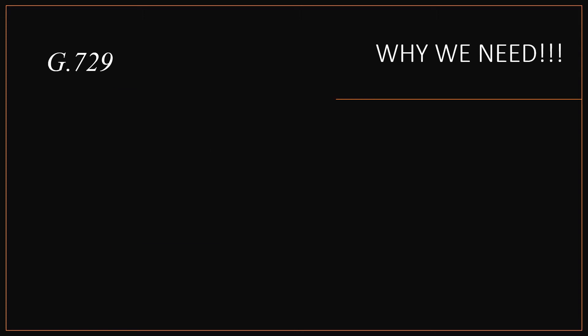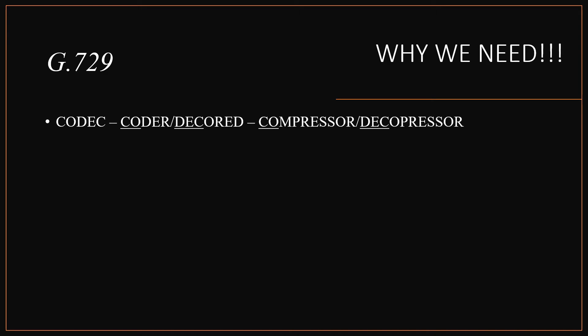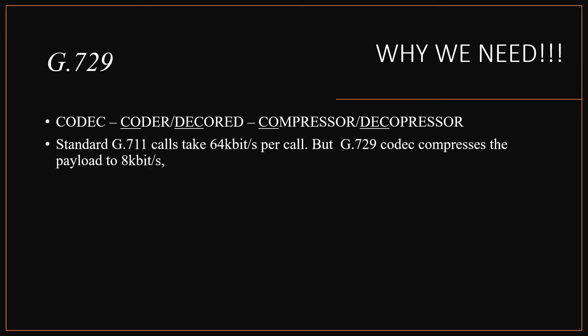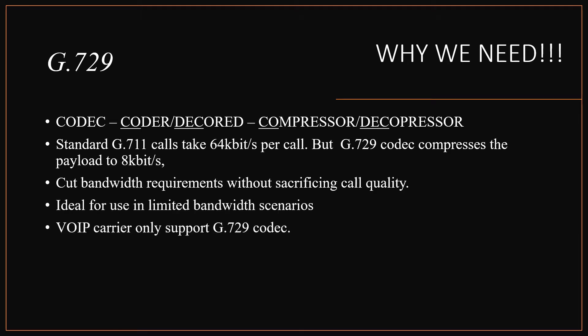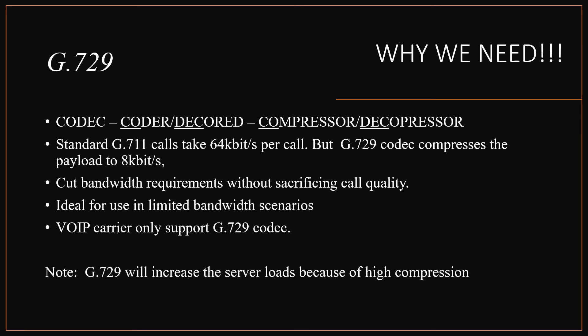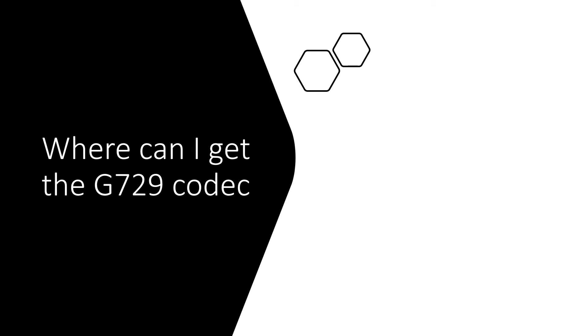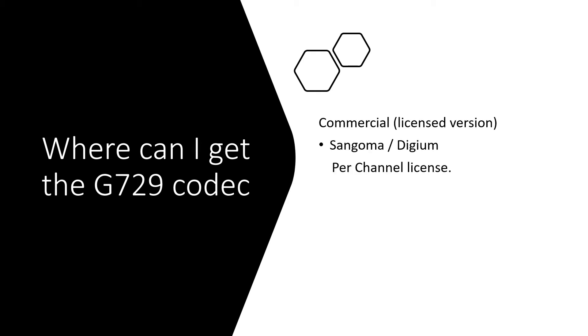Why do we need the G729 codec? Codec is a technical term for coder and decoder, or compressor/decompressor. G711 calls take 64 kilobits per call, whereas G729 compresses calls to 8 kilobits per call. Because of high compression, the bandwidth requirement is less without sacrificing call quality — ideal for limited bandwidth scenarios. Some VoIP carriers only support G729. Note that the G729 codec might consume more CPU load.